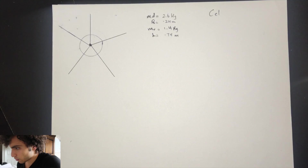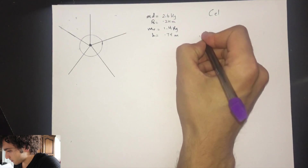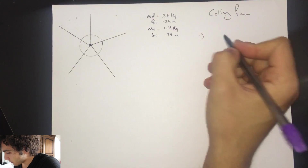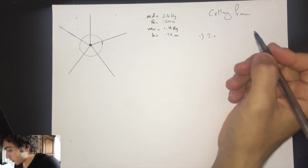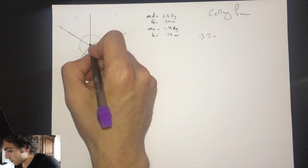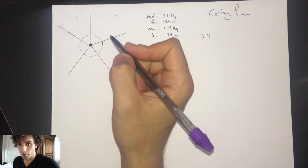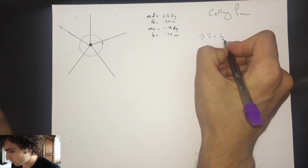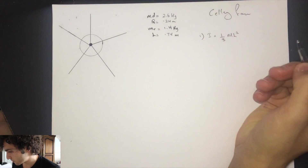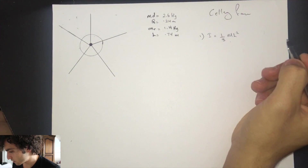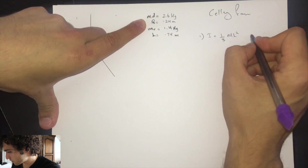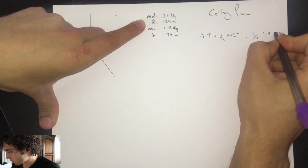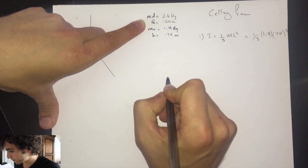It's really easy. You just need to find the inertia for the rod, and the axis is at the end of the rod. You need to memorize this formula: it's one-third ML squared for a rod rotated about its end. For my values, it was one-third times 1.4 times 0.74 squared.